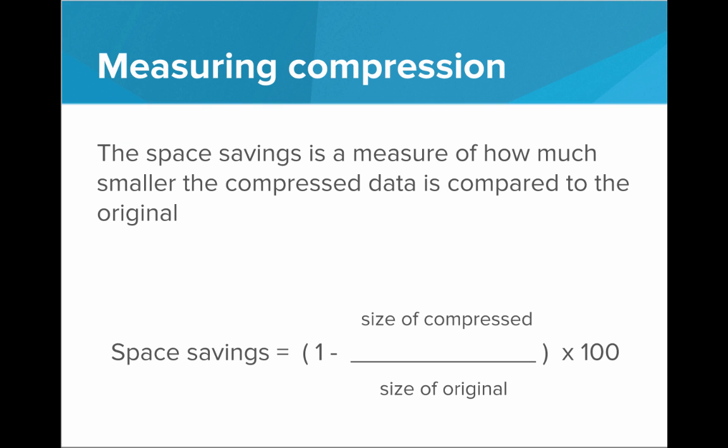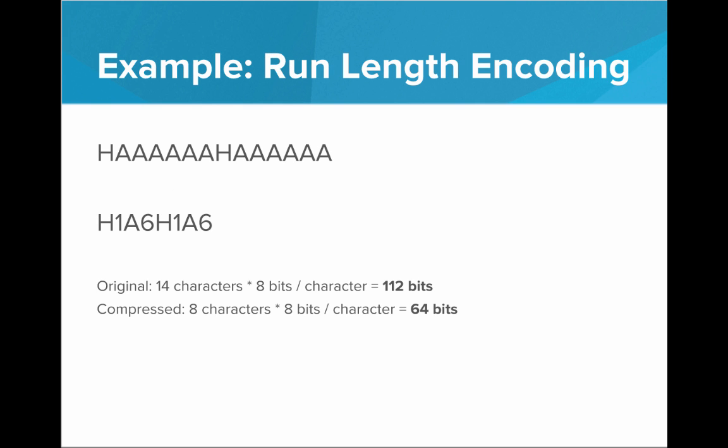Now how do we measure a compression algorithm? How do we know when an algorithm is doing a good job? Well, one common measurement is space savings. So space savings is a measure of how much smaller the compressed data is compared to the original. Now the formula for space savings is one minus the size of the compressed file divided by the size of the original file multiplied by 100. And what we get is a percentage of size decrease. So for example, if we take the run length encoding example, the original was 112 bits and the compressed was 64 bits. So to calculate the space savings, we simply do one minus 64, the compressed size, divided by 112, the original size, multiply that by 100. And we see that we actually have a 42.9% space savings. The compressed data is 42.9% smaller than the original. That's pretty good. That's saving a lot of space.